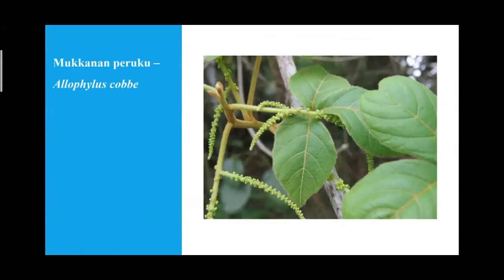The next plant is Mukana peregr — Allophilus cobbe — an anti-inflammatory and orthopedic care drug used in folk medicine. The leaf paste is used for applying over fractured areas and for making bandages. It is also considered as Arshwagna.